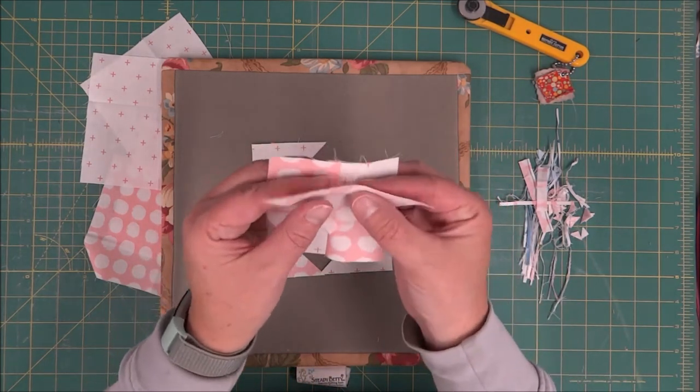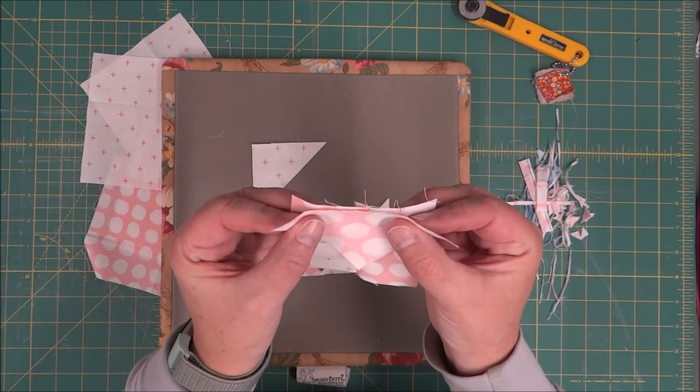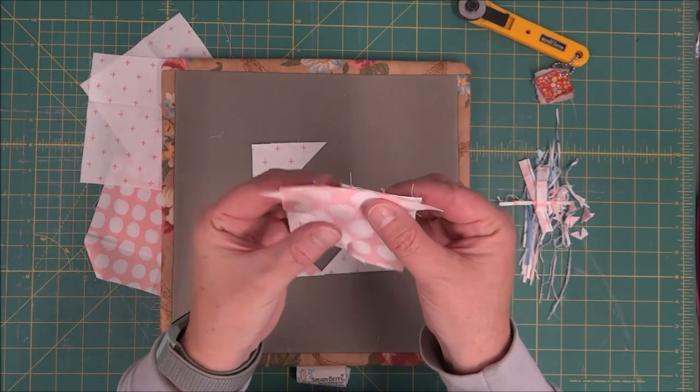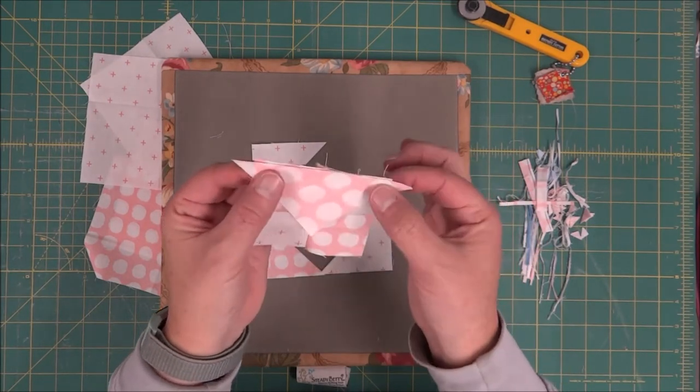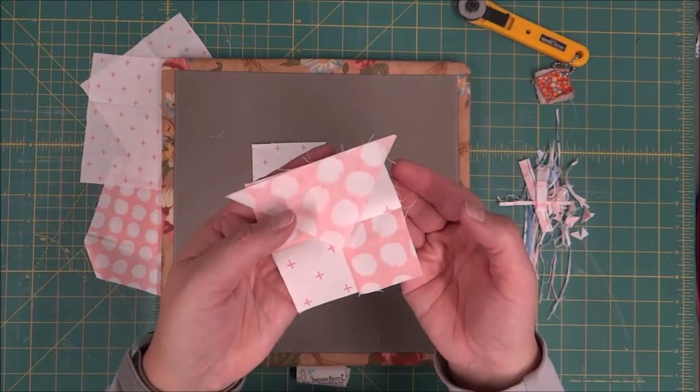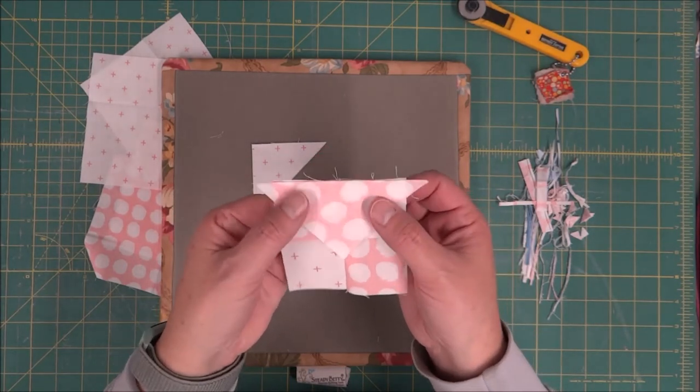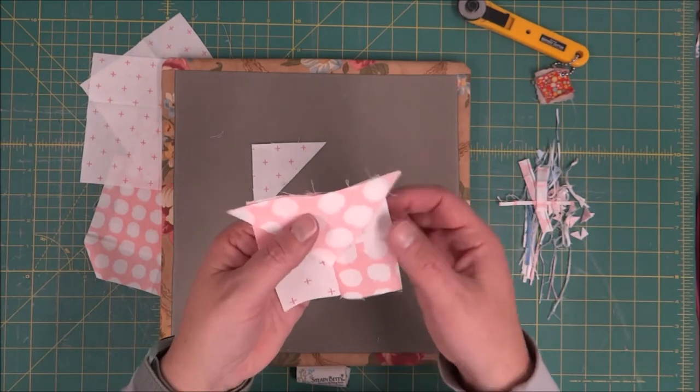If you will notice, your triangles are a little bit longer than the four patch, which is great because you want these points to hang off. This will give you a great quarter inch when the block is finished, a perfect point.